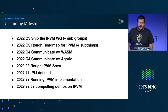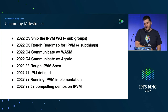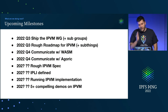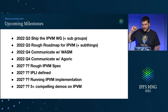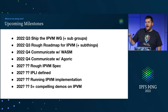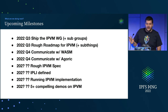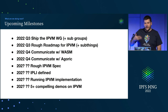Here are some milestones. This quarter we're going to ship the IPVM working group and subgroups — there's a good structure for two or three subgroups. We want to have a rough roadmap for IPVM and the sub-projects. We want to communicate with the Wasm community and the Agora community because of a lot of overlap and shared work. Sometime within less than a year, we want to arrive at at least a rough candidate IPVM spec that we can work through.